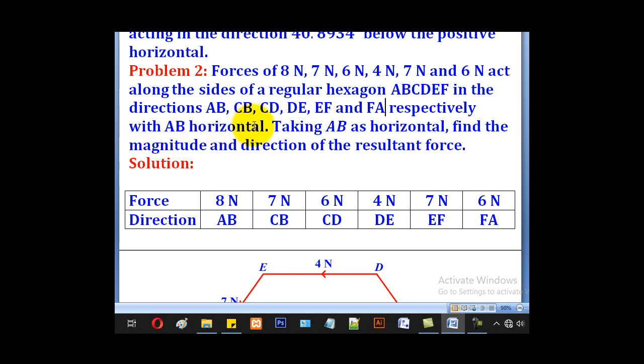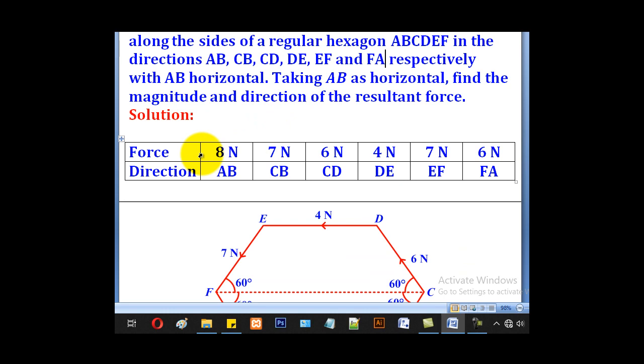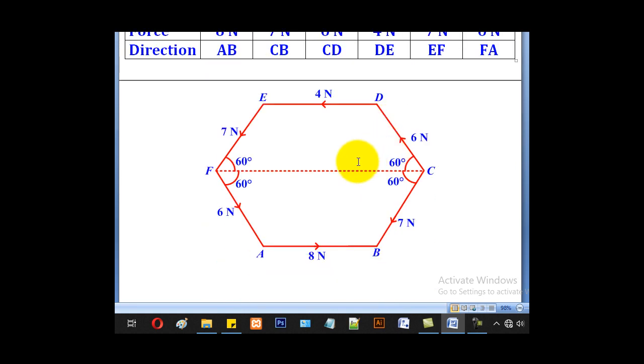With AB horizontal, taking AB as the horizontal, find the magnitude and direction of the resultant. So the first step is to list down the forces with their respective directions. After that, come and draw your hexagon. Hexagon is a six-sided polygon. Regular meaning all sides are equal. After that, you label in an anti-clockwise direction.